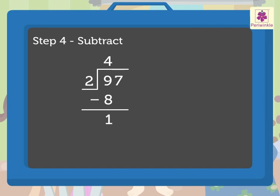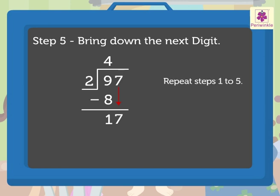Now step 5 is to bring down the next digit, that is 7. After bringing down the digit, we repeat steps 1 to 5 again till there are no more digits to bring down.